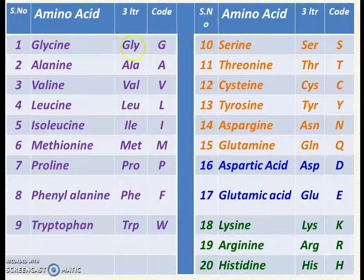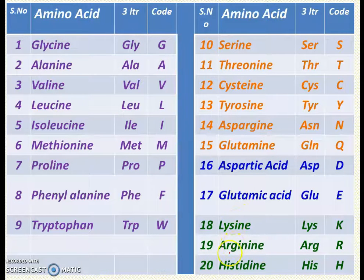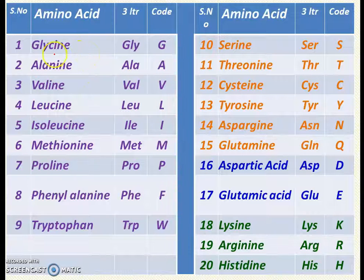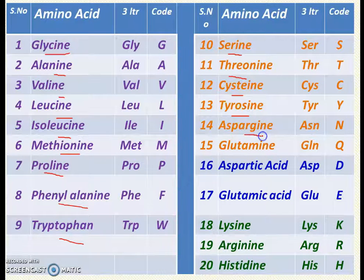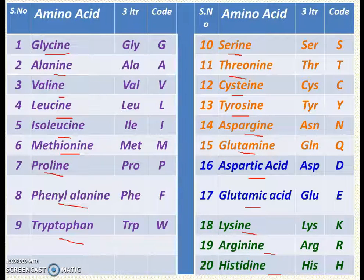Let us now see the names of the 20 amino acids. Keep your pen and paper ready. These are the 20 standard amino acids, designated with different colors to follow the classification — which makes them easy to remember. The 20 amino acids are: glycine, alanine, valine, leucine, isoleucine, methionine, proline, phenylalanine, tryptophan, serine, threonine, cysteine, tyrosine, asparagine, glutamine, aspartic acid, glutamic acid, lysine, arginine, and histidine. Each amino acid is designated in two different manners.